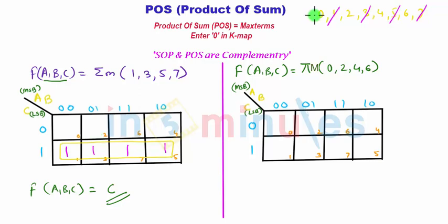Those remaining bits are 0, 2, 4, and 6. Hence function ABC can be defined in the POS form by product of capital pi of capital M 0, 2, 4, 6.